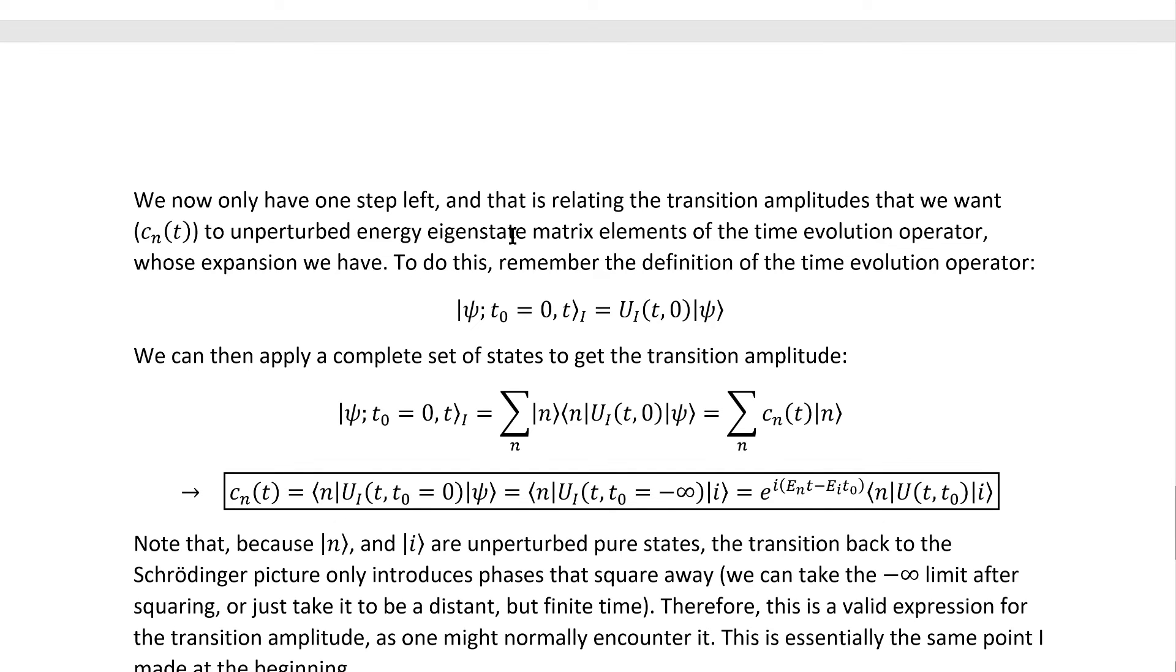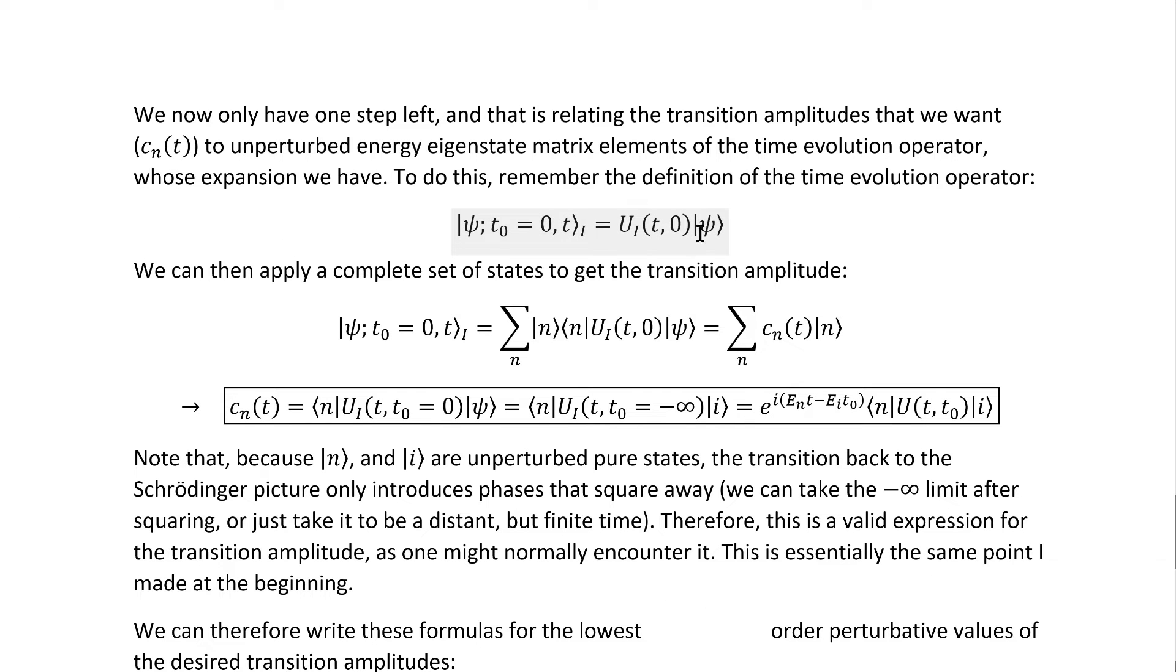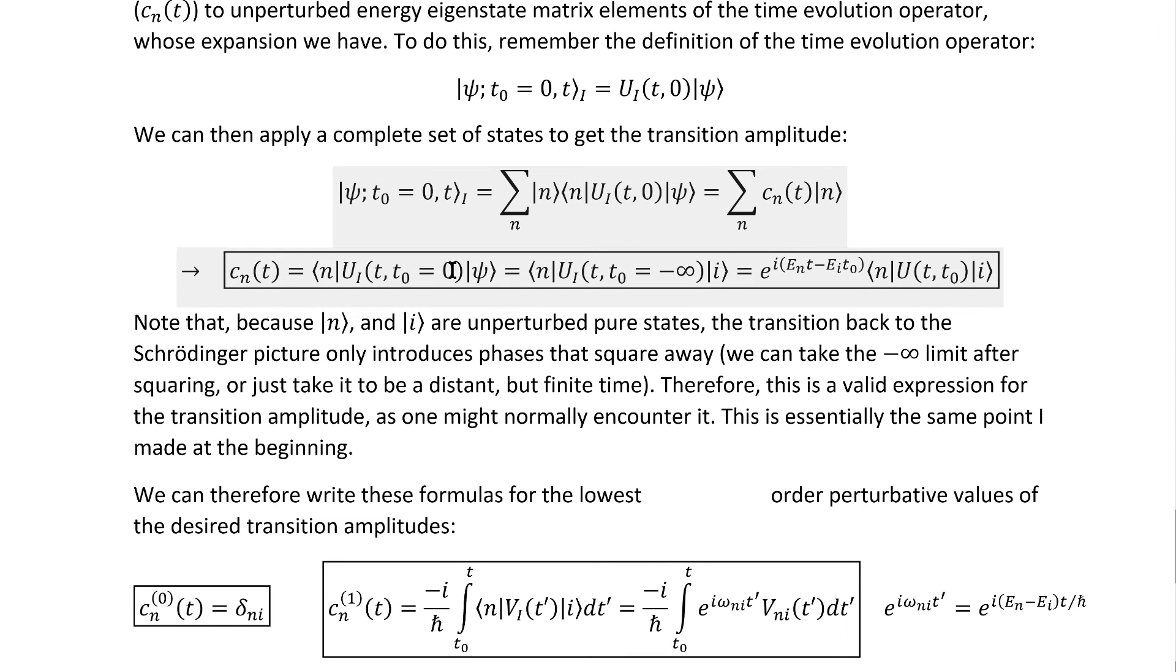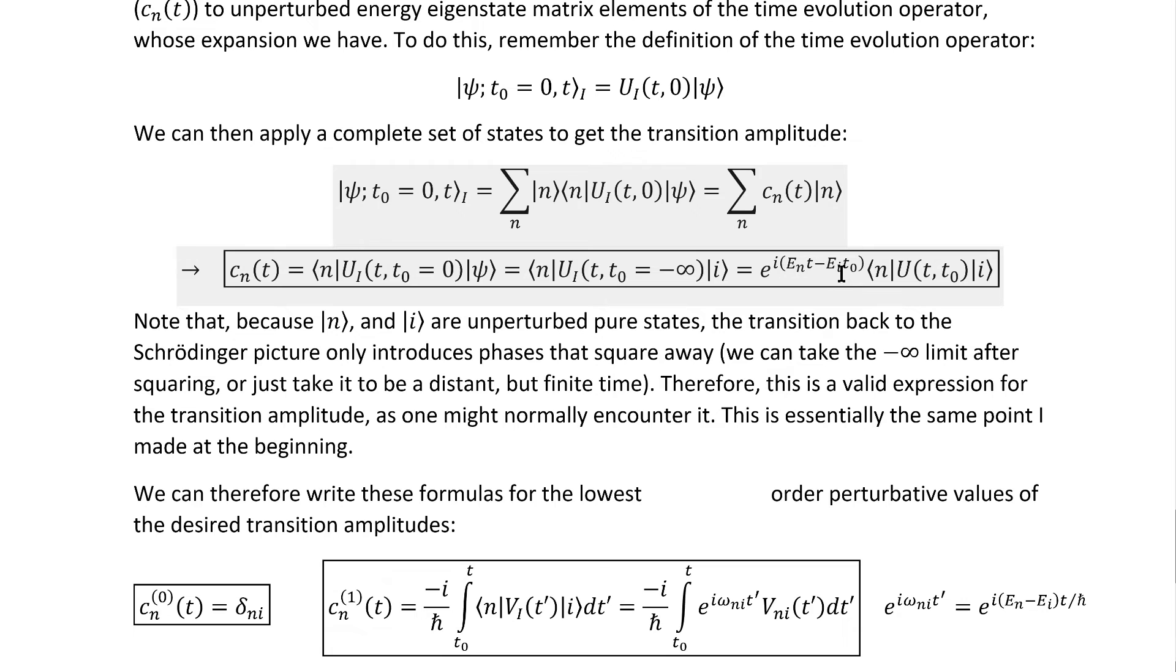We now have only one step left, and that is relating the transition amplitudes that we want, the CN(t)'s, to the unperturbed energy eigenstate matrix elements of the time-evolution operator, whose expansion we have. To do this, remember the definition of the time-evolution operator. We can then apply a complete set of states to this expression to get the transition amplitude. We remember this quantity from above, and we definitely remember expanding it in terms of unperturbed states, but of course there's a unique way of doing that for any distinct state, so we can just equate these matrix elements with the CNs. We can then bring in another time-evolution operator factor to get it in terms of the unperturbed initial state, and then transition to the Schrödinger picture to make sure, yet again, that it's valid to call CN's transition amplitudes.